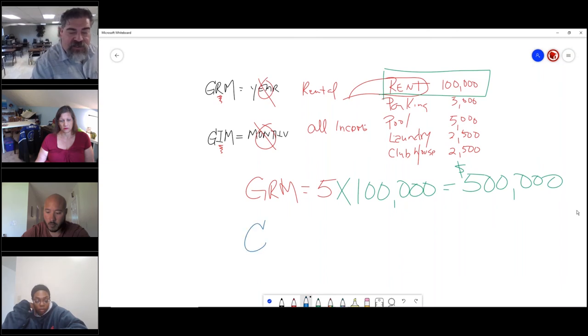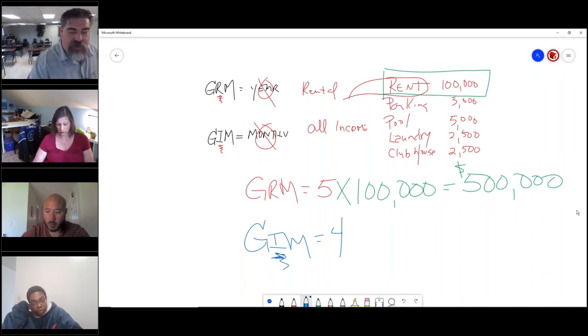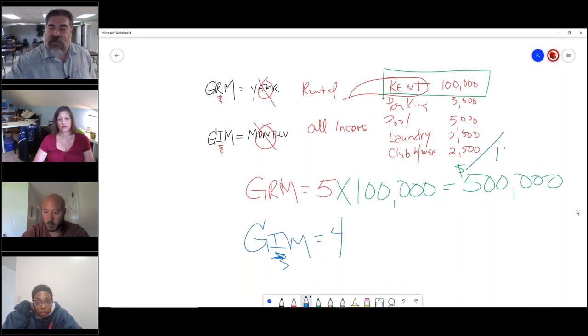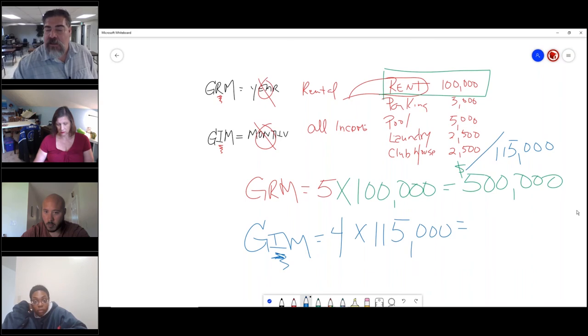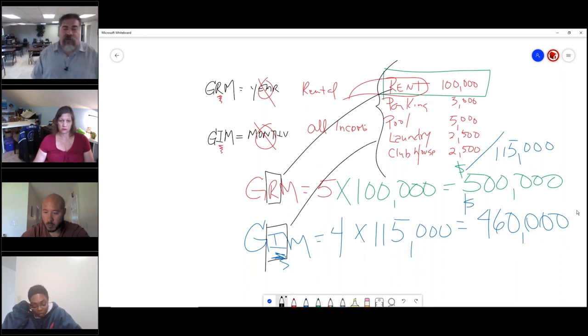The other side of that coin is if I told you the gross income multiplier was 4, now this is income—that is all of this together. So that's $115,000. Four times $115,000 is $460,000. So the gross rent multiplier uses only the rent. The gross income multiplier uses all of the income.